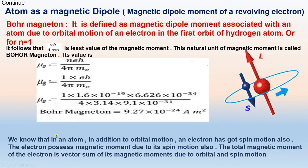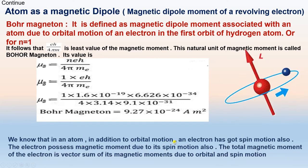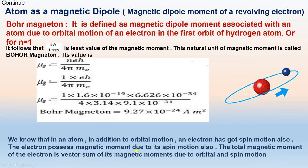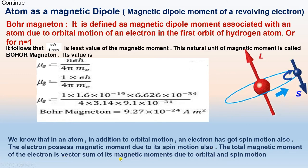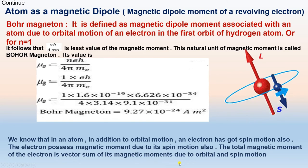In an atom, in addition to orbital motion, the electron also has spin motion. The electron possesses a magnetic moment due to its spin as well. The total magnetic moment of an electron is the vector sum of the magnetic moment due to orbital motion and spin motion.